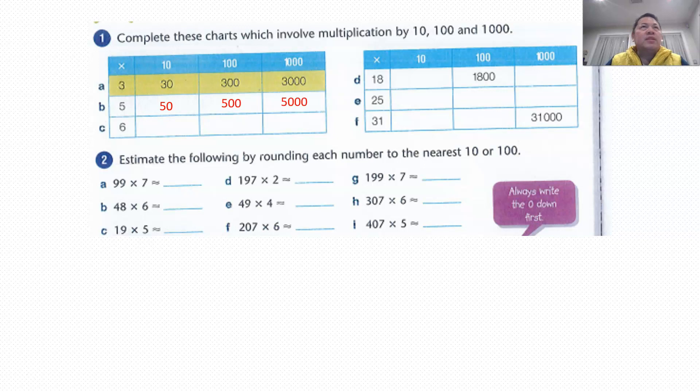It's quite easy. Whenever you times 10, you add a 0 behind the number. When you times 100, you add 2 zeros behind the number. When you times 1,000, you add 3 zeros behind the number. It's quite straightforward. So complete the rest.